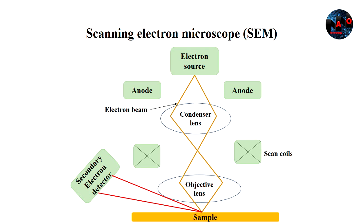When the incident beam of electrons hits the specimen, X-rays and three types of electrons are emitted: backscattered or primary electrons, secondary electrons, and Auger electrons. SEM makes use of the primary or backscattered and secondary electrons.